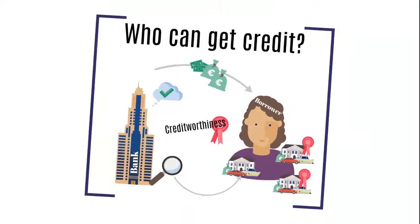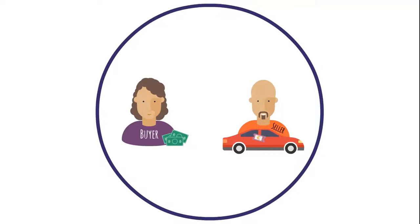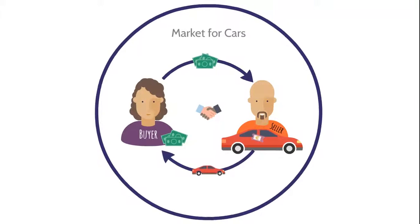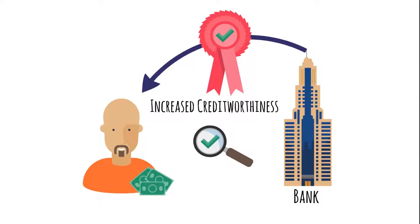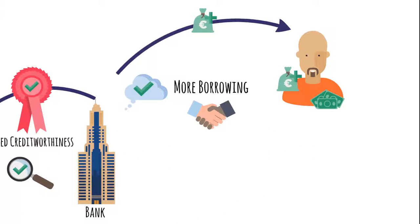So let's see what our borrower can do with the new money. She can enter another market, for example the market for cars. The transaction is settled and the car dealer receives the money for it. After many of these transactions and all the money he saved, the car dealer's creditworthiness increases and this makes it easier for him to borrow money from the bank. So if the bank agrees, he receives more money, again under the condition that he repays his debt in the future.